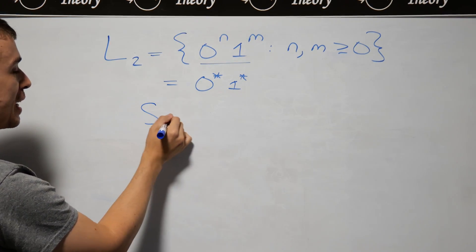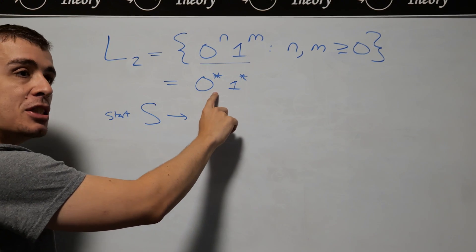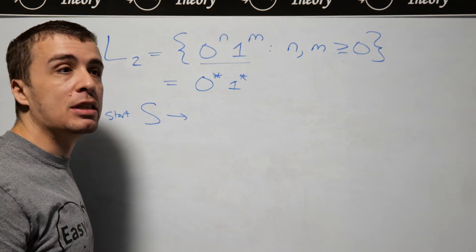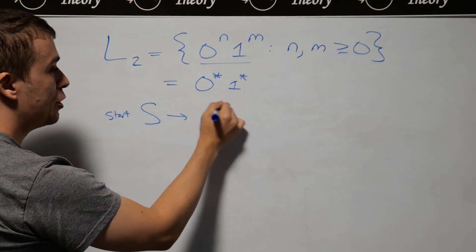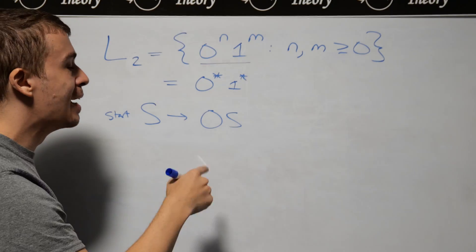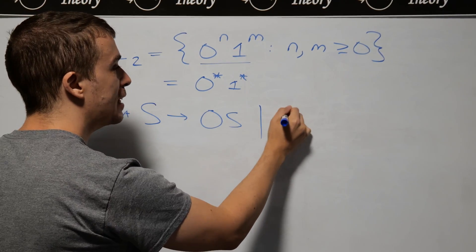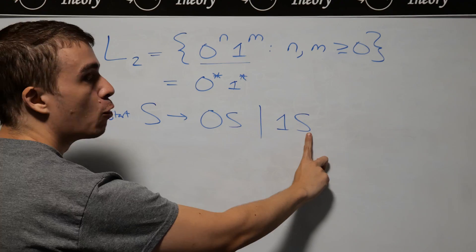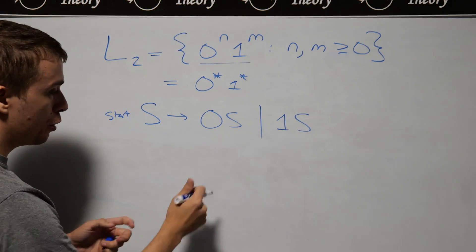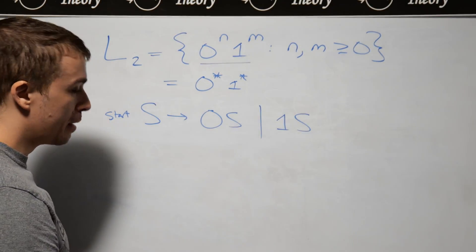Every context-free grammar needs a start variable, so let's make one. We need to generate some number of zeros, and once we're done generating the zeros, we need to be able to generate some ones. We can make zeros by having a zero followed by S, which says you can add zeros on the front as needed. Then at some point we need to switch over to ones. But it would be incorrect to just add a rule S goes to 1S with the same start variable, because we could interchange these two rules and go back and forth, which is a bad idea.